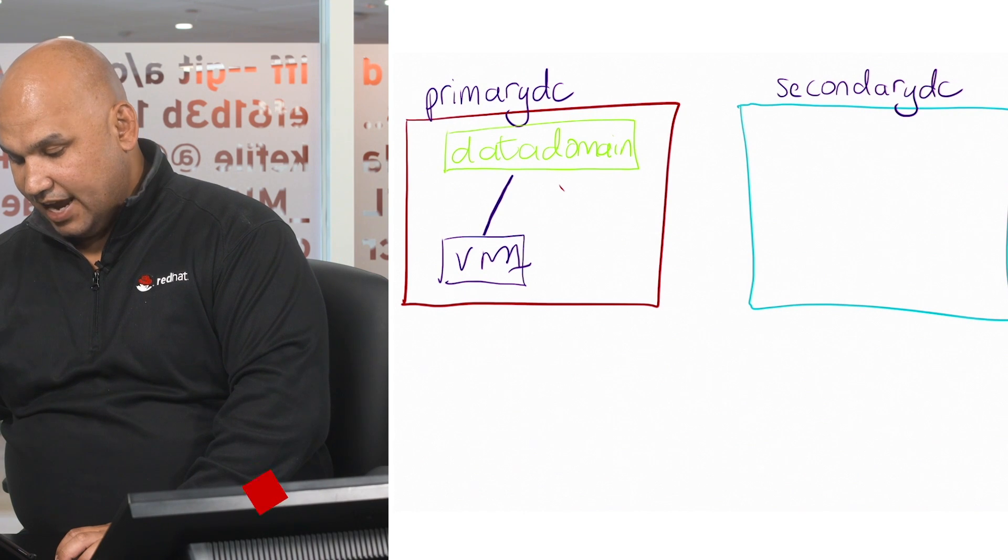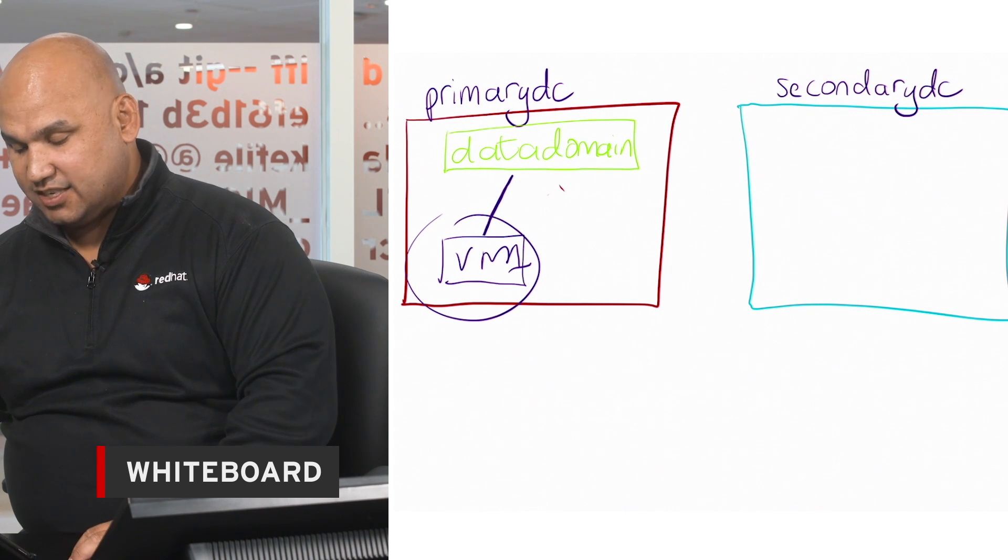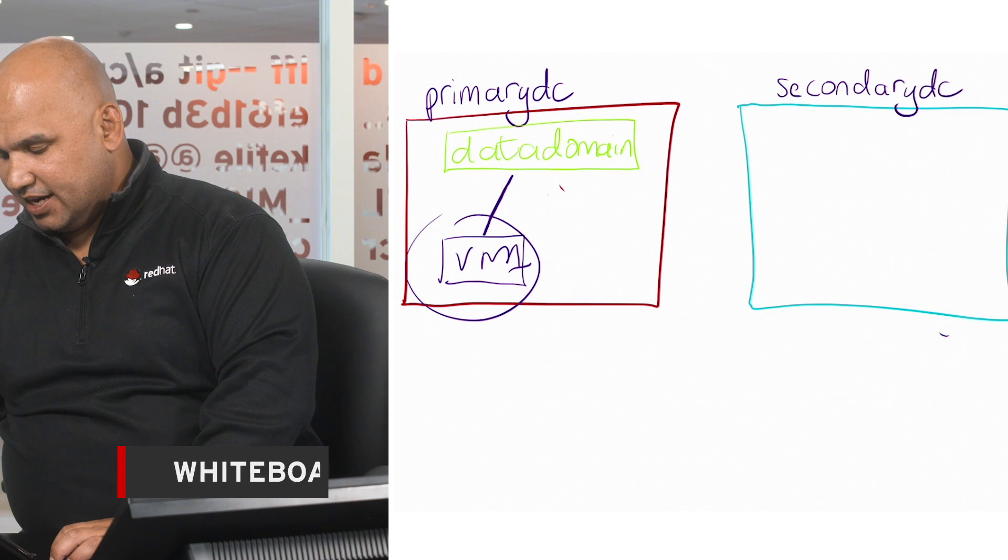Take this data domain, which contains VM1, detach it from the data center, called primary DC, reattach it to a different data center.